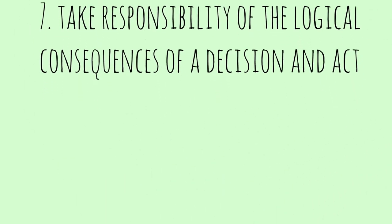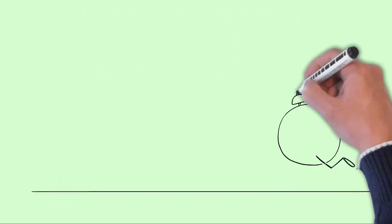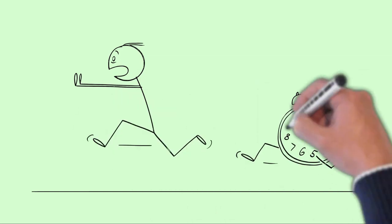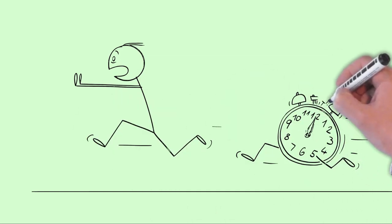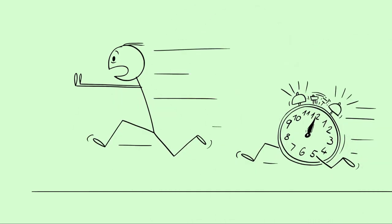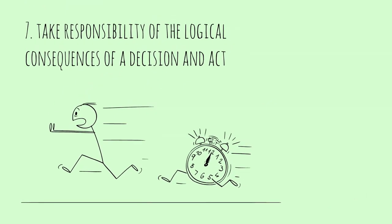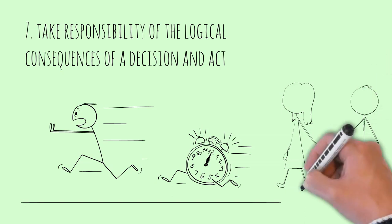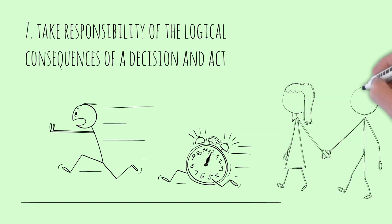Number 7, Take Responsibility of the Logical Consequences of a Decision and Act. Sa Values Education, itinuturo din natin ang pagpananagutan ng bawat isa. Kung ang ginawa ng ating mga estudyante ay may hindi ka nais-nais na bunga o resulta, kailangan nilang harapin at panagutan, huwag takasan. Kung bagsak dahil di nag-aral bago mag-exam, aba ay harapin. Kung nakabuntis o nabuntis, dapat panagutan at panindigan dahil ginusto nila yun. Ang keyword natin dito, related sa will, ay Taking Responsibility, Paninindigan o Pananagutan.